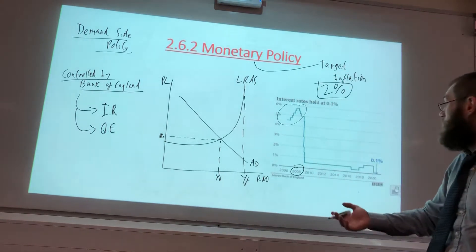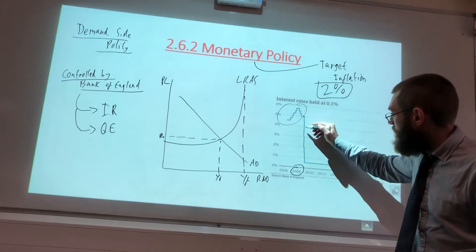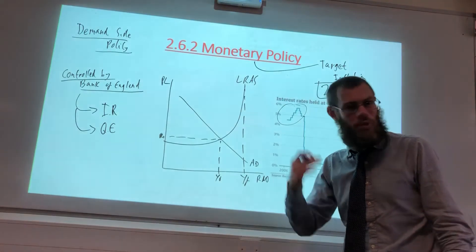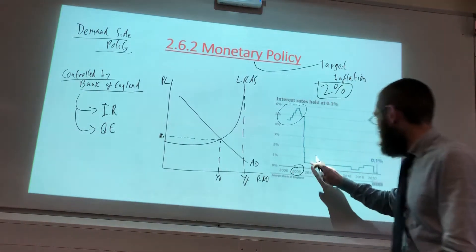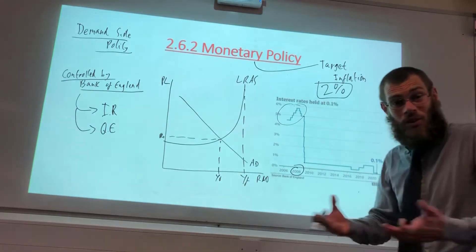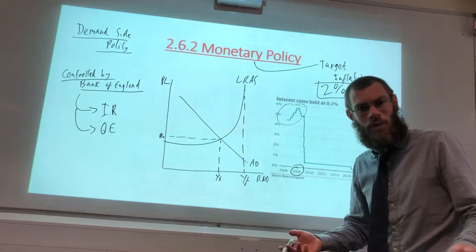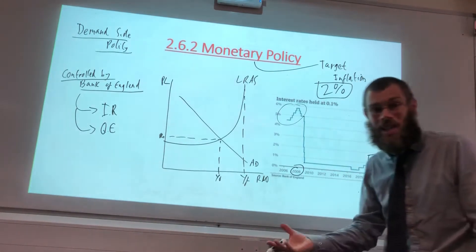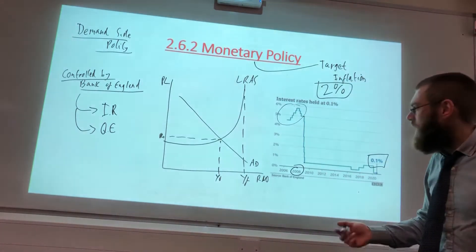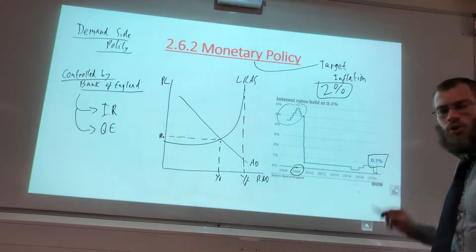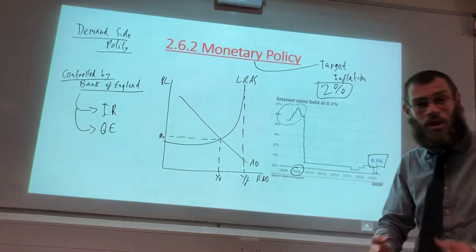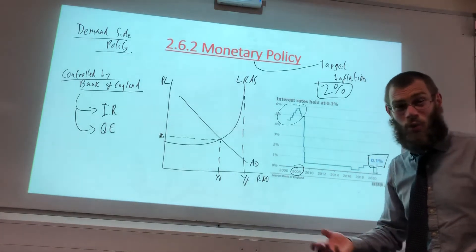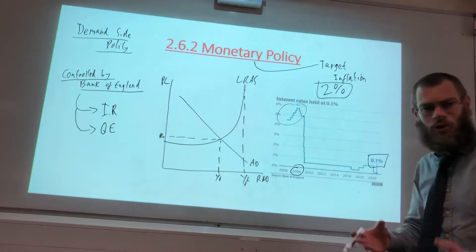The Bank of England dropped rates from five percent staggered downwards to 0.5 percent — a roughly 90 percent reduction almost overnight. Rates sat at that level for quite a few years, and with the global pandemic they are currently at 0.1 percent. This immediately gives us an evaluation point: if you've gone from around six percent down to 0.1 percent, the theory of decreasing interest rates is correct, but the reality is there is very little room left — you've used your resource.